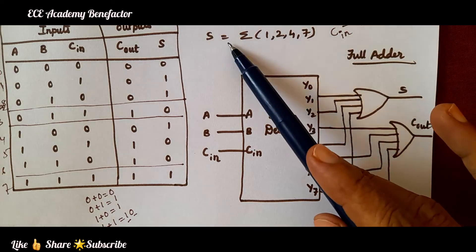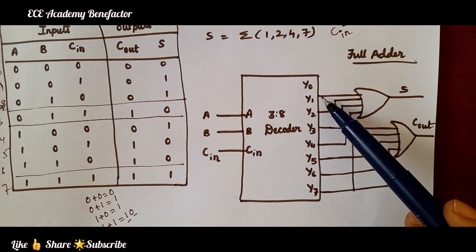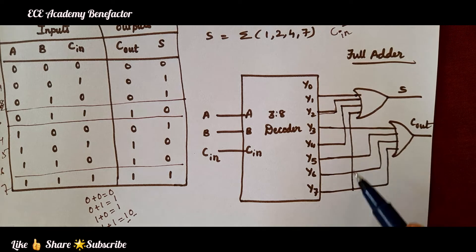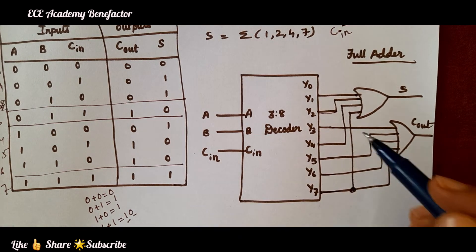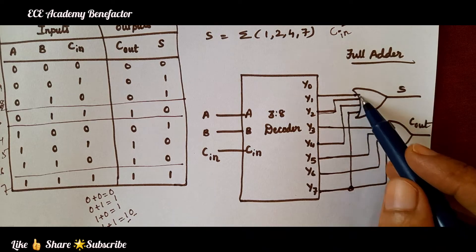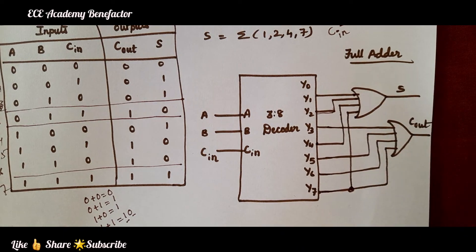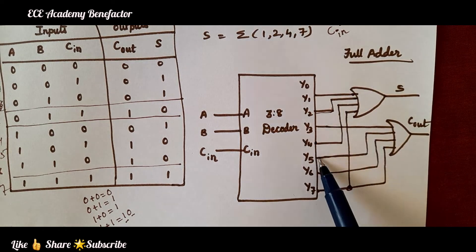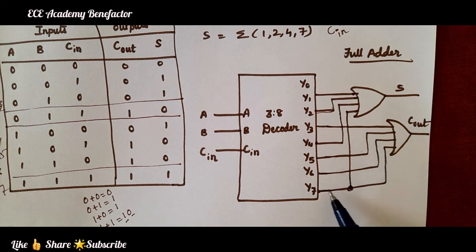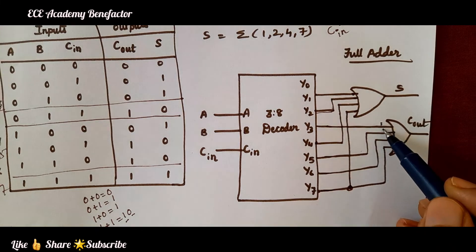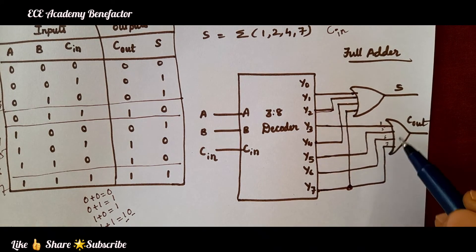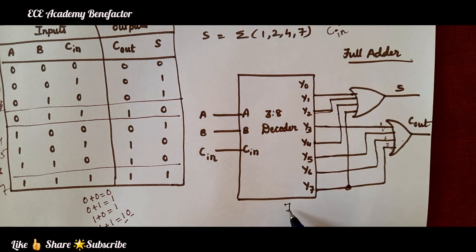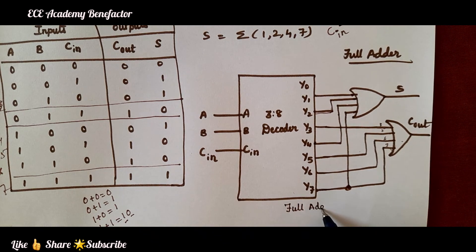To generate the sum output, we connect y1, y2, y4, and y7 to an OR gate. To get C-out, we connect y3, y5, y6, and y7 to another OR gate. In this way we can implement the full adder using a 3-to-8 decoder.